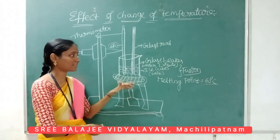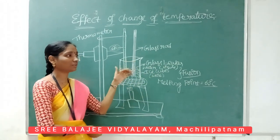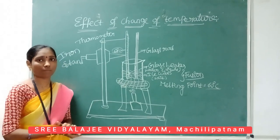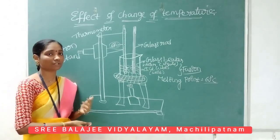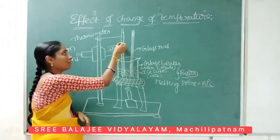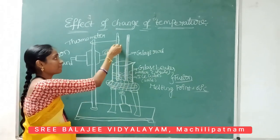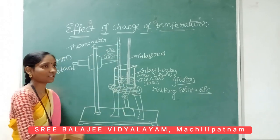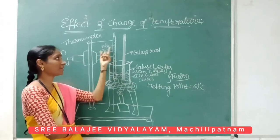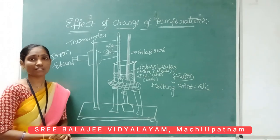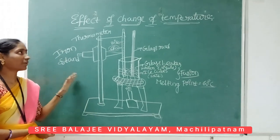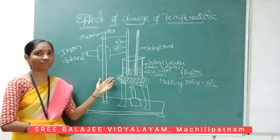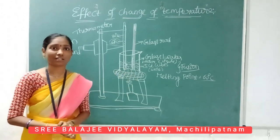After some time, the liquid will convert into gaseous form. That process is called evaporation. Evaporation can take place at any temperature. As we continuously apply heat, the temperature increases. For example, here evaporation takes place at 80 degrees Celsius. This diagram shows how temperature changes matter from one state to another. Thank you, students.